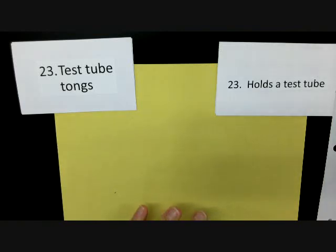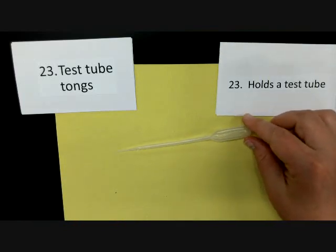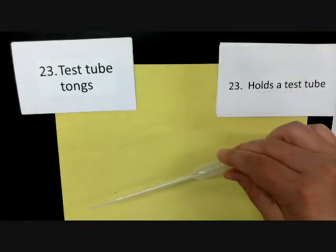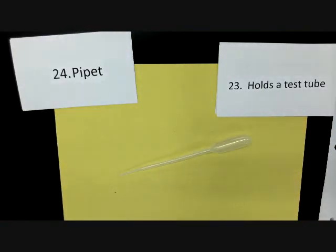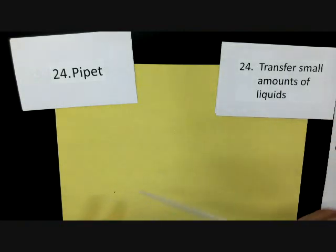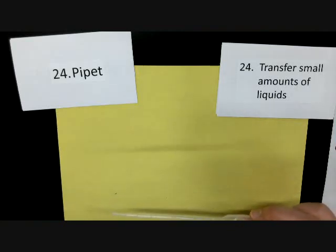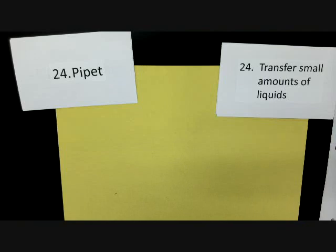The next one — the picture looks like a medicine dropper. This is called a pipette, and a pipette is used to transfer small amounts of liquids. If you need just like five milliliters of water, you could use the pipette to do that. I'm sure you've used pipettes in the past.